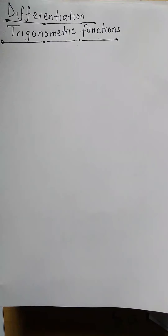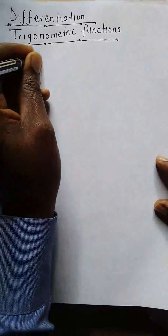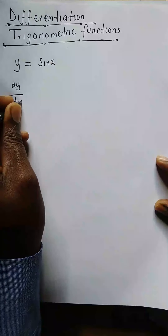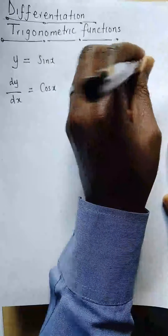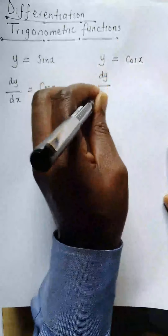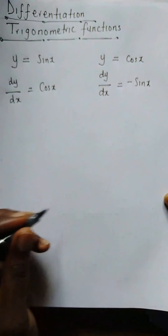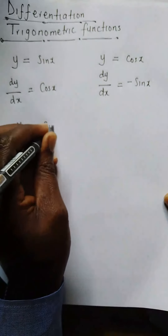We now look at differentiation of trigonometric functions. Given a function y = sin(x), our dy/dx is simply equal to cos(x). How about if you're given y = cos(x)? Here our dy/dx is simply equal to negative sin(x).